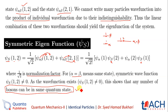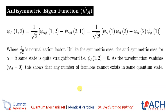Ab hum do particles ka anti-symmetric wave function discuss karte hain. Anti-symmetric psi_A(1,2) will be equal to 1 over root 2 — the normalization factor — times [psi(alpha,beta,1,2) minus psi(alpha,beta,2,1)]. Isko extend karein individual product ki form mein: psi(alpha,1) psi(beta,2) minus psi(alpha,2) psi(beta,1). Minus sign is liye hai kyunke yeh anti-symmetric hai.